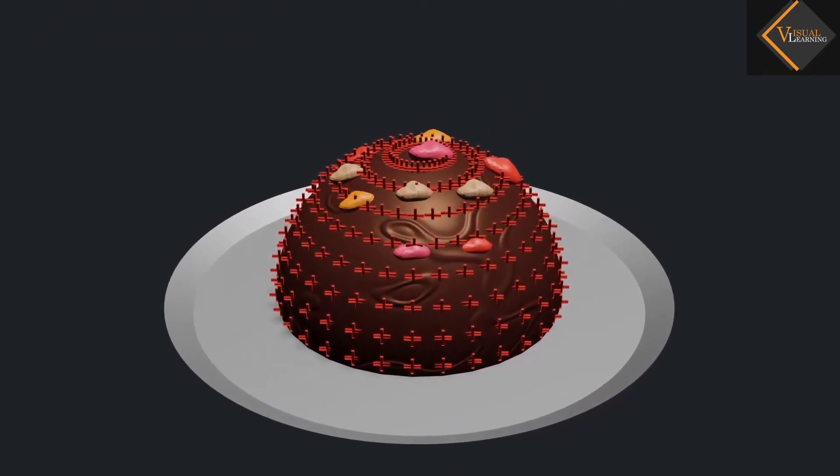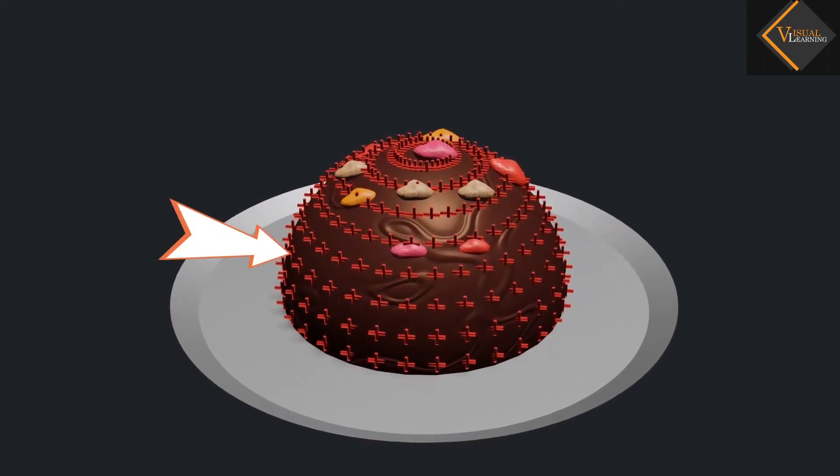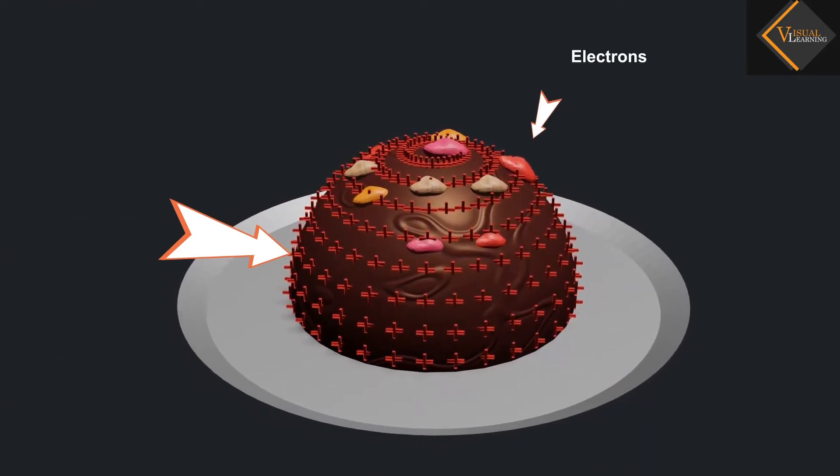According to Thomson's atomic model, an atom is made up of a positively charged sphere, into which negatively charged electrons are implanted.